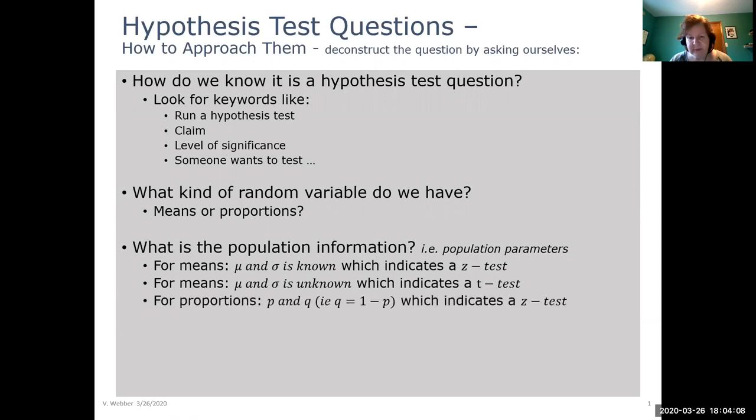And for proportions we'd have p our population proportion and q our population failure. So remember the p and q come from the binomial model. So p is the probability of success q the probability of failure. And again that would be a z test.